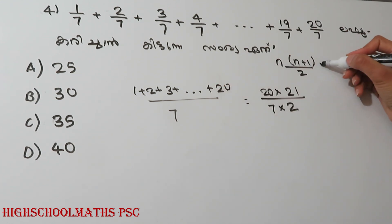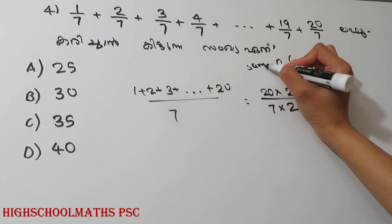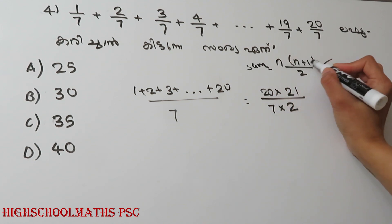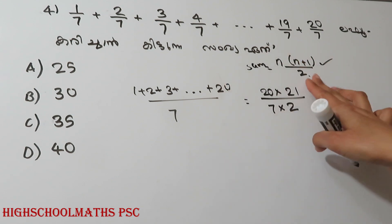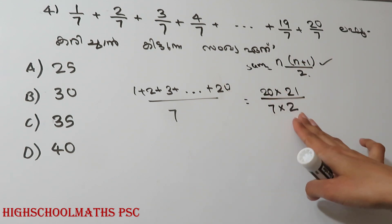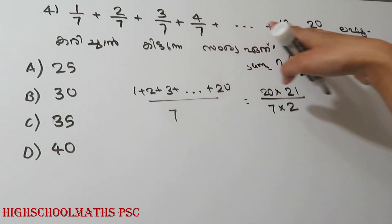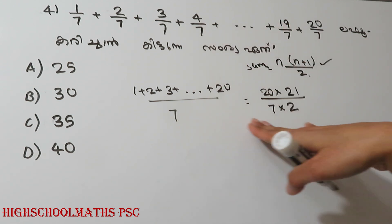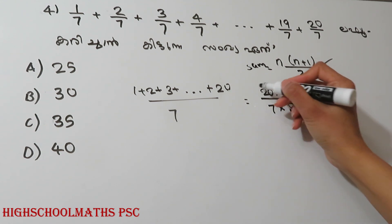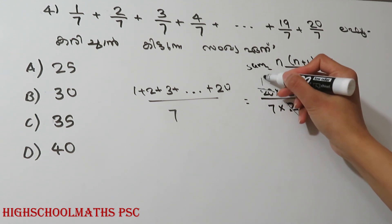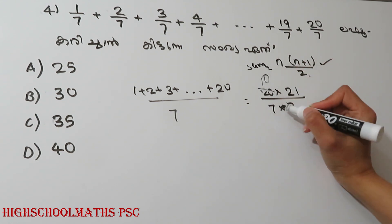We will use the sum of the equation: N into (N plus 1) by 2. This is 20 into 21 by 2. Now, this gives 7. If you have 20 to 1, it is 10.